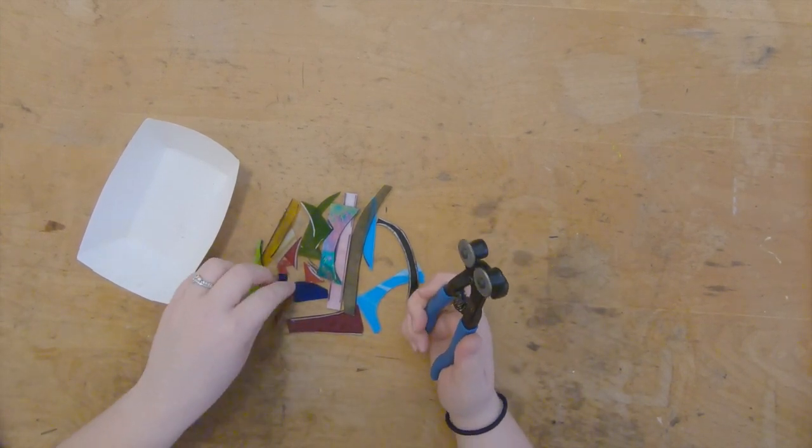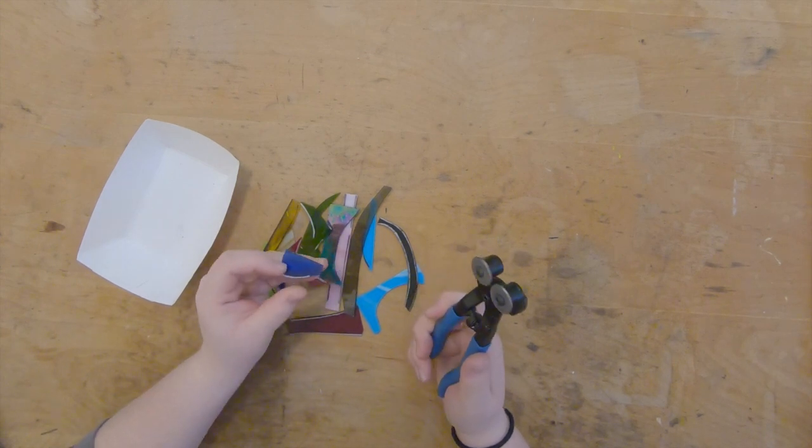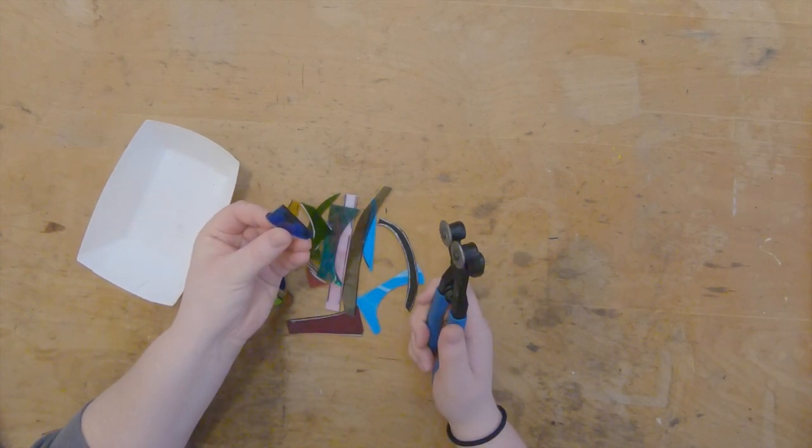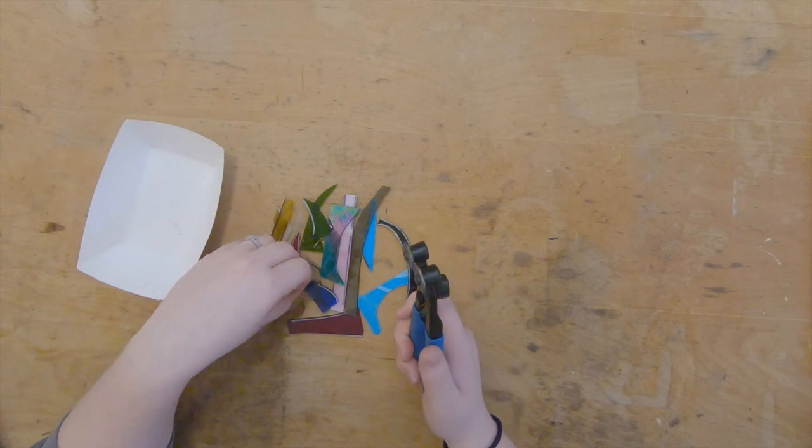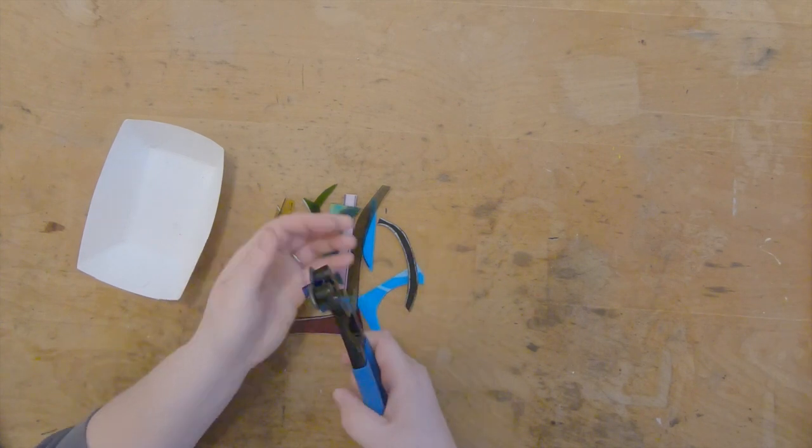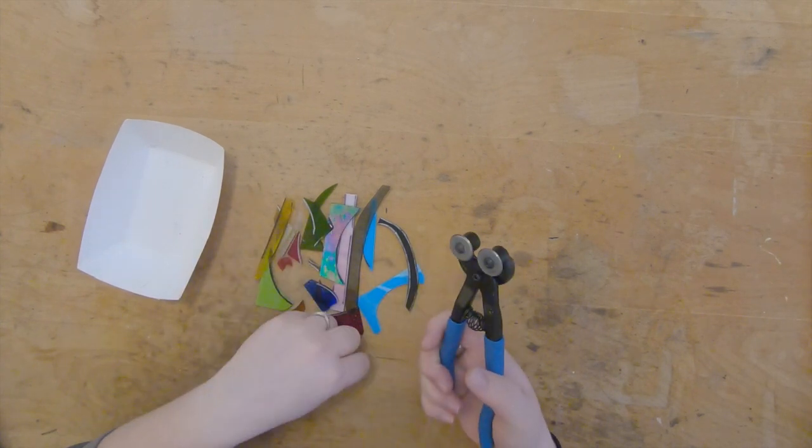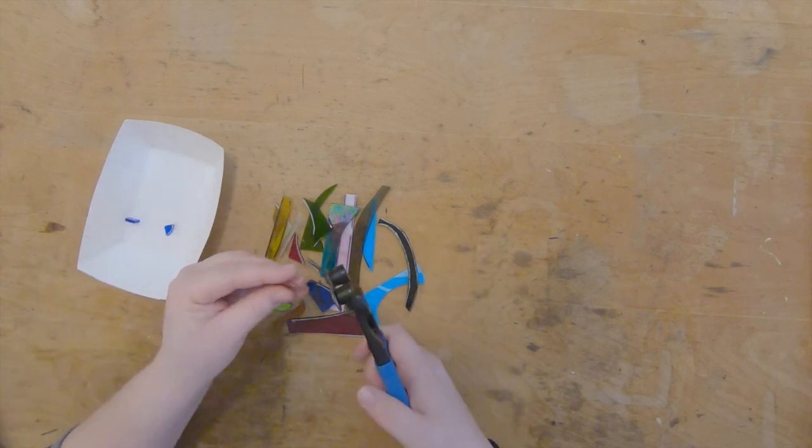Once you have your safety glasses on, we can use our nippers to manipulate the glass into different shapes. You can break these up into very irregular shapes easily just by squeezing however the piece fits and breaking them up.